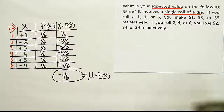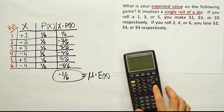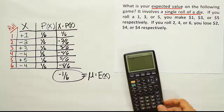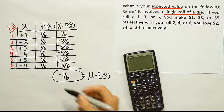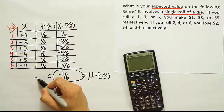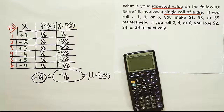It's a good idea to convert to decimal since we're dealing with money. One-sixth of a dollar is 1 ÷ 6, which is approximately 17 cents. So the expected value is approximately −$0.17. That means on average you expect to lose about 17 cents per game.